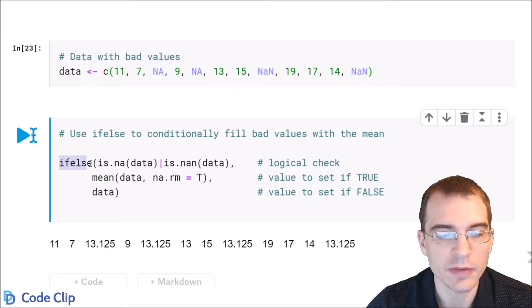So in this case, we're calling ifelse. The first thing you pass in is a logical check that you want to use to fill the values. So in this case, we want to get rid of bad values. So we want to check, are they NA, is.na on the data, or is.nan?